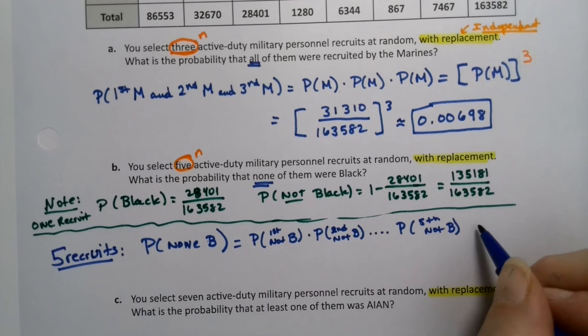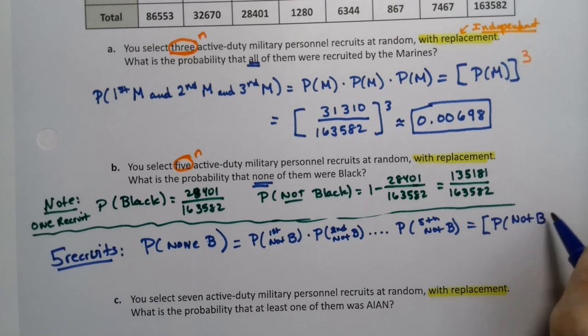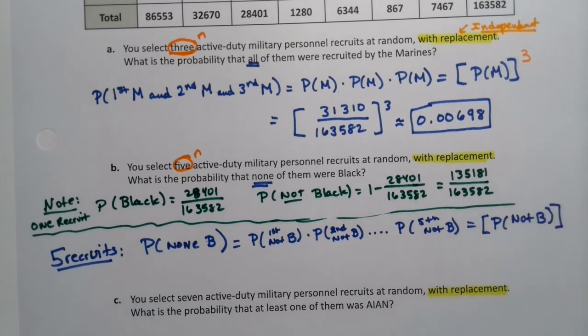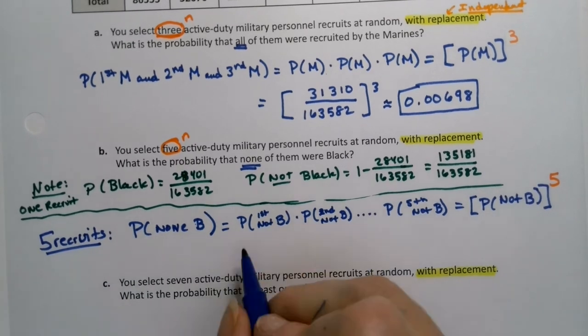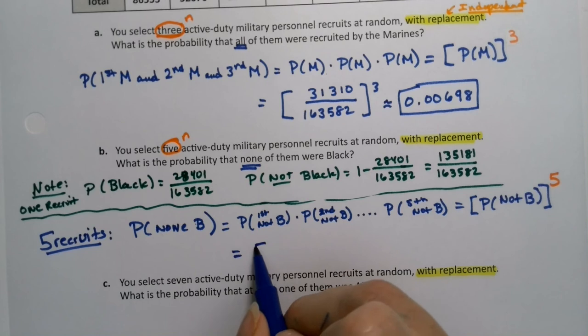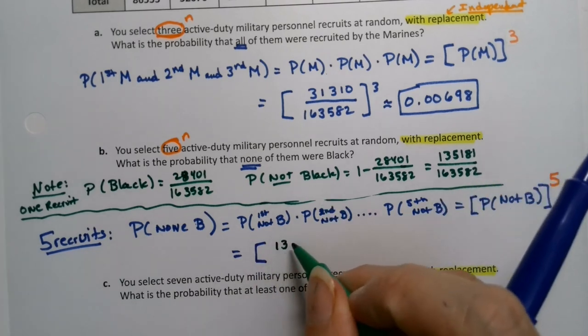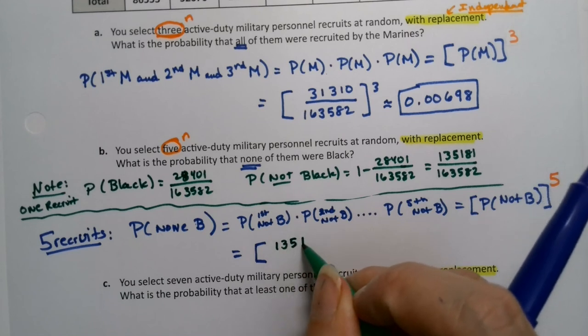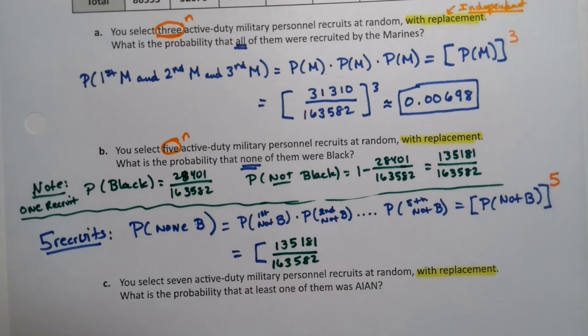Well, these are all the same probabilities. So what you're really saying is take the probability of not being black out of these recruits and raise it to the fifth power, because there's five recruits. None of them should be black. So that means I want to take the probability of not black, which was what I just figured out up here. It's 135,181 over 163,582, and I raise that to the fifth power.